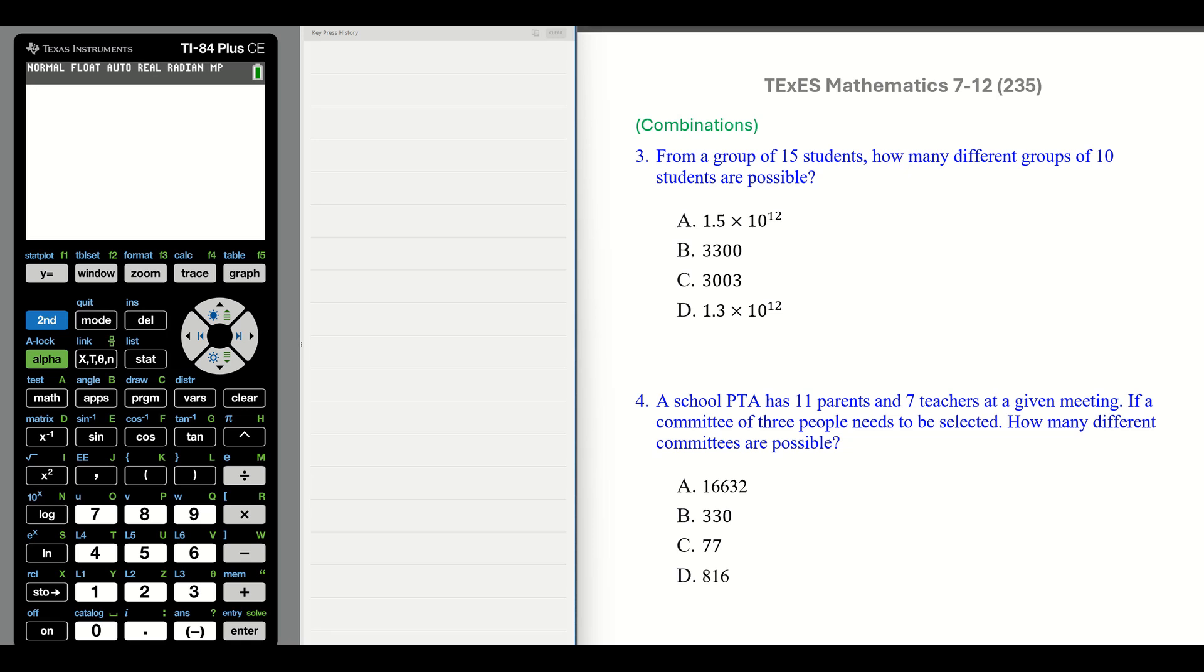Number three: from a group of 15 students, how many different groups of 10 students are possible? Again, this is a situation of grouping, but this time it's combinations. If we're going to group them up, we don't care about the order. So we have N number of students, that's our N.